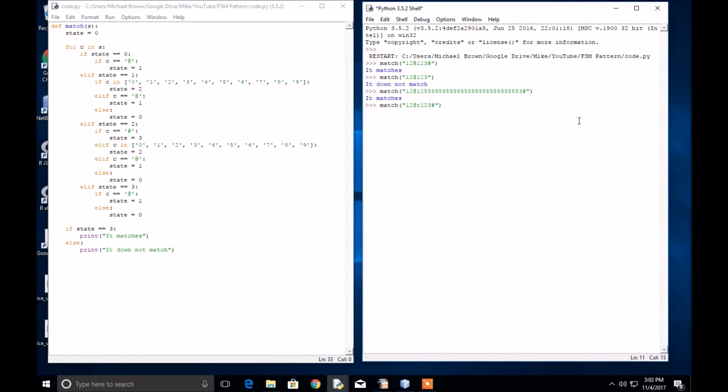Insert something other than a digit. It does not match. Remove the @ sign. It does not match. You can add another @ sign, and it matches. So this is how you can develop a finite state machine to do pattern matching and quickly and easily implement it in Python.